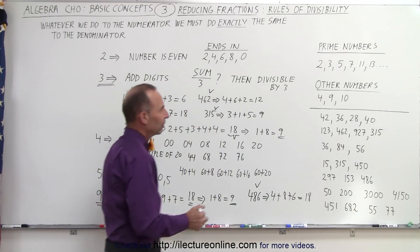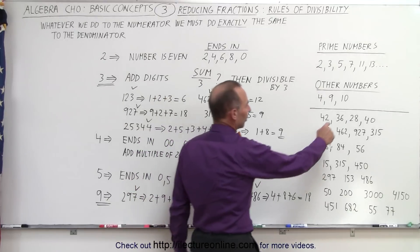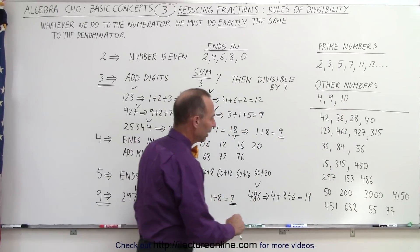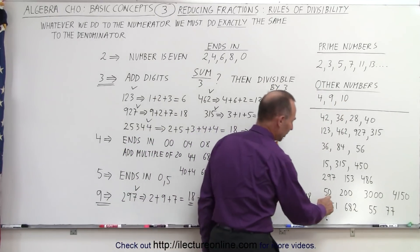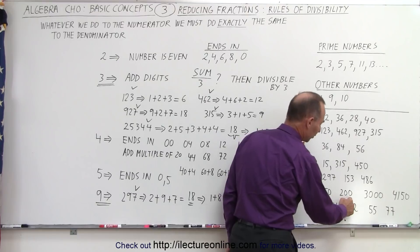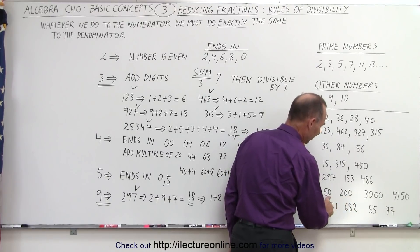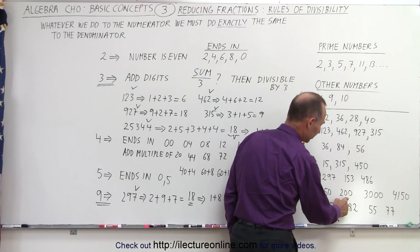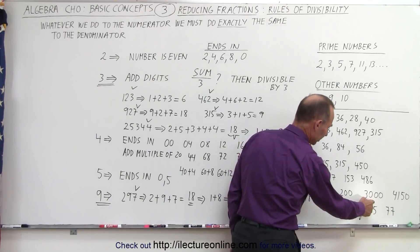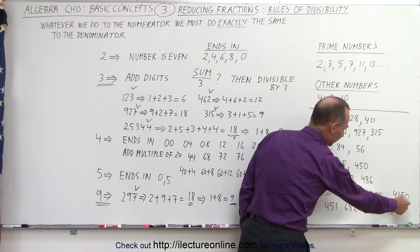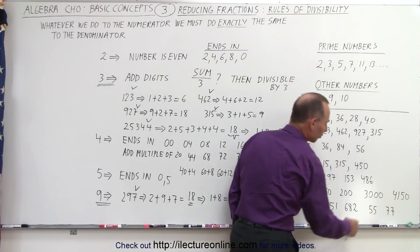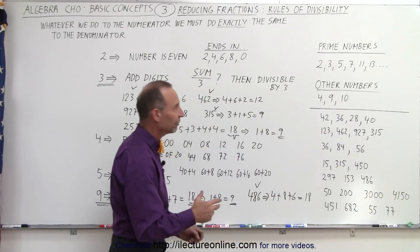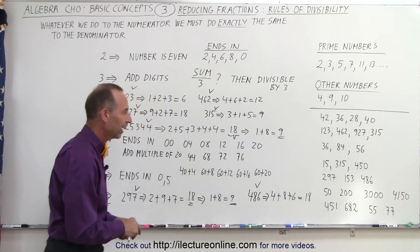The number 10 is fairly straightforward. A number has to end in at least one zero to be divisible by 10. So 50, 200, 3000, and 4150 can all be divided by 10 — as long as there's a zero at the end.